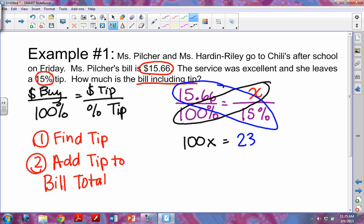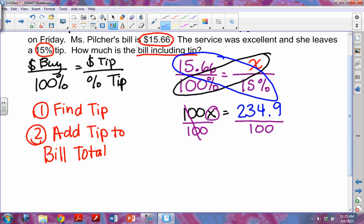Let me multiply that right now because remember when you cross multiply you multiply them, you don't divide them. When I do that I get 15.66 times the 15 percent gives me 234.9. So now I want to get the X by itself, so I'm going to divide each side by what is with the X, so that's a hundred. So then this hundred goes away.